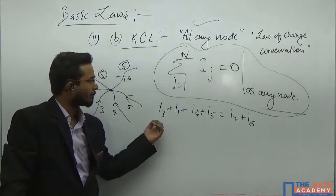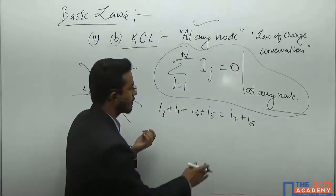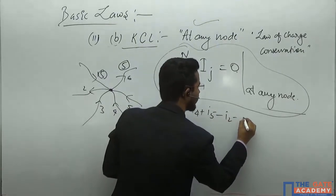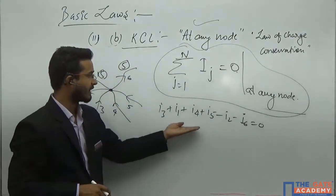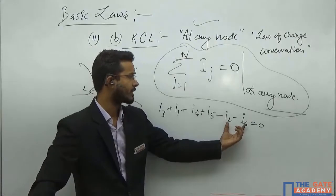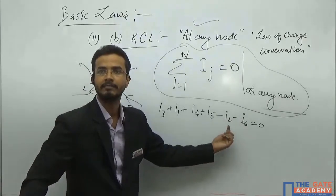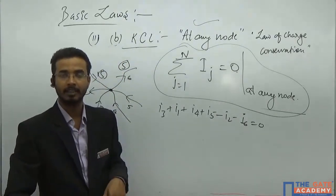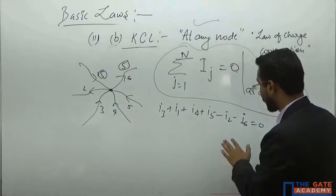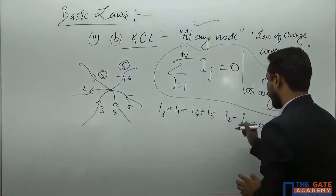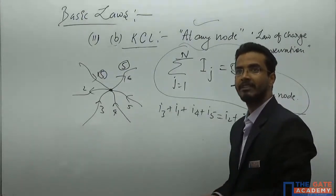Algebraic sum means either you take outgoing currents as positive and incoming as negative. So you write: minus i2 minus i6 plus i1 plus i3 plus i4 plus i5 equals zero. Algebraic means according to the sign. Some people say the total incoming current will be equal to total outgoing current — total outgoing equals total incoming — both have the same meaning.